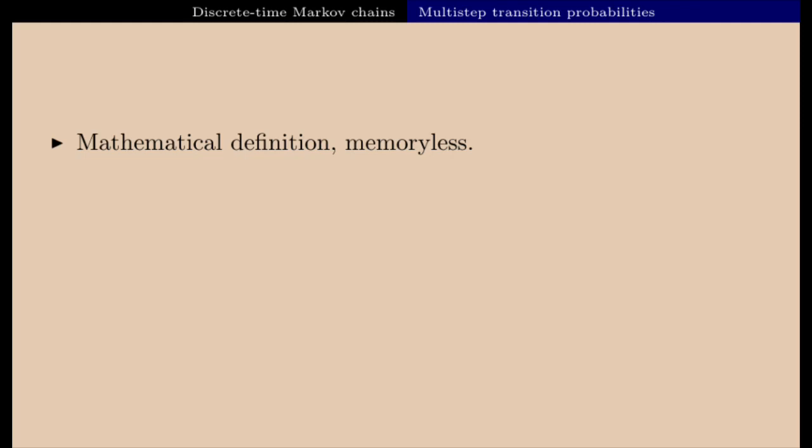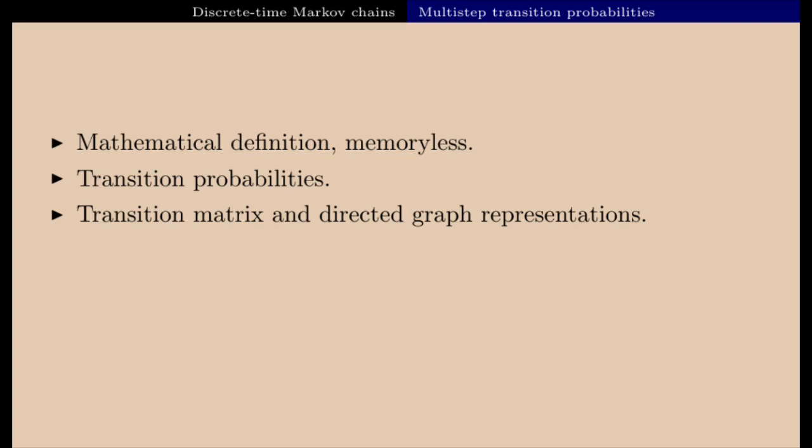First, I'm going to start by giving you a rigorous definition of the notion of Markov chain. Then we'll see what the real meaning of the definition is — the intuition behind the definition — and we'll see that this implies that discrete time Markov chains can be described completely by what we call their transition probabilities. Then we'll see that you can use those transition probabilities to define two important objects: the transition matrix, and what I'm going to call the directed graph representation of the Markov chain.